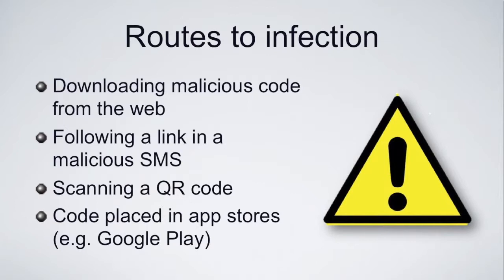How might people encounter it? Downloading the code from the web. Following links in a malicious SMS message — one of the routes that's been more established. Scanning QR codes if you're exploiting people in physical environments — one of the risks with QR codes is you can't tell, in some cases, until you've scanned it, where it's actually trying to lead you to. It requires a conscious recognition on the part of a user to make a value judgment on whether that's a safe place to go. And of course code placed in the app stores themselves, particularly on the Android platform.